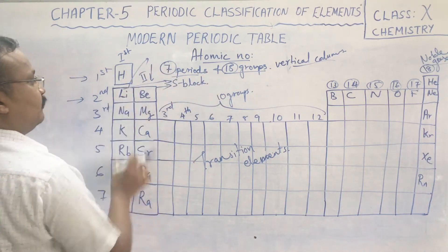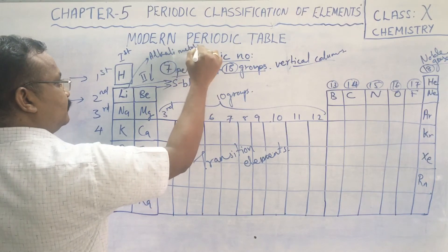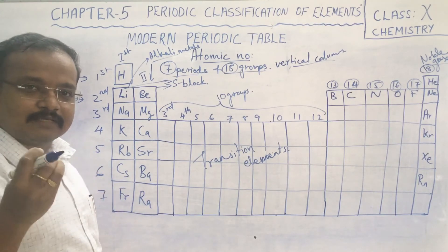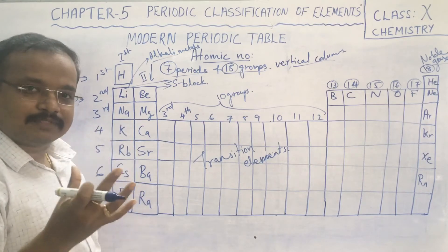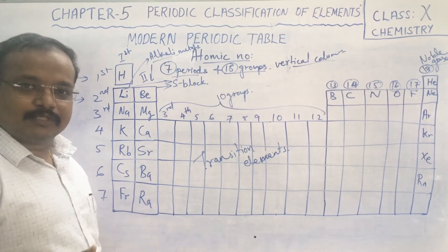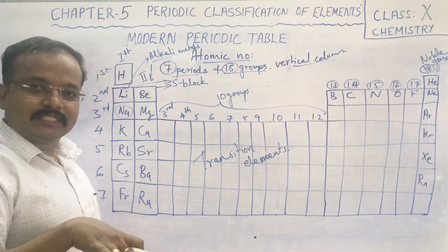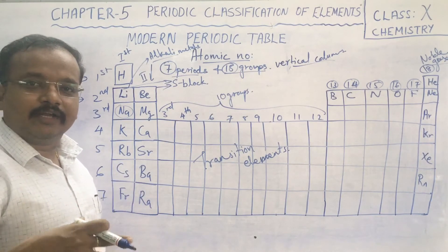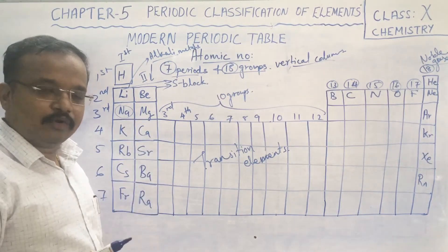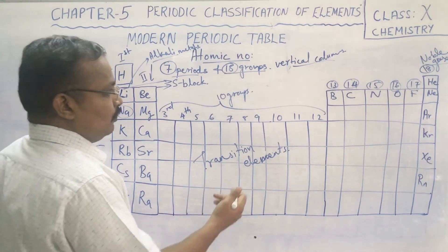The first group elements are called alkali metals. These metals are very highly reactive in nature. When they dissolve in water they produce alkaline substances — for example, sodium reacts vigorously with water producing hydrogen gas and sodium hydroxide, and potassium reacts similarly to form potassium hydroxide, which are alkaline substances.